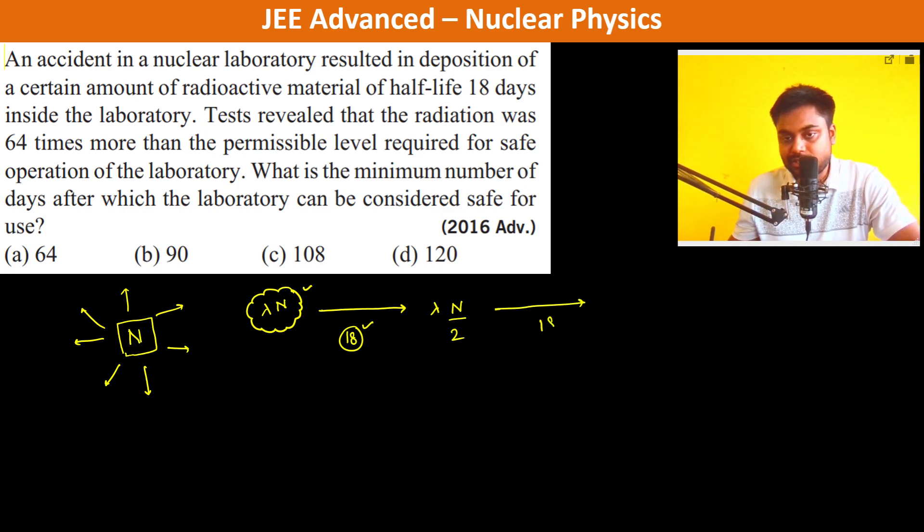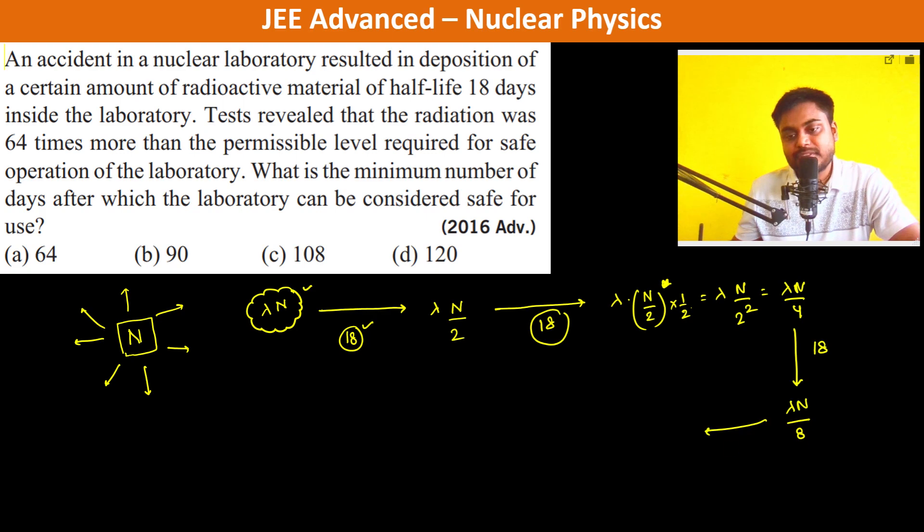Again, 18 days, it is going to be lambda into N by 2 whole square, which is lambda N by 4. Then again, 18 days by 8, again 18 days, it is going to be 16.